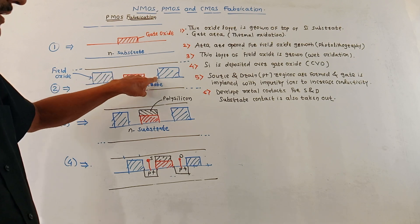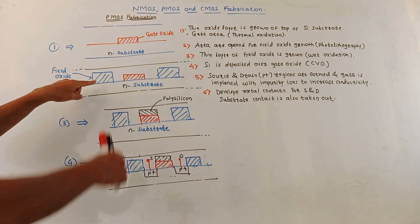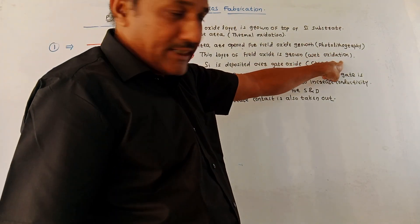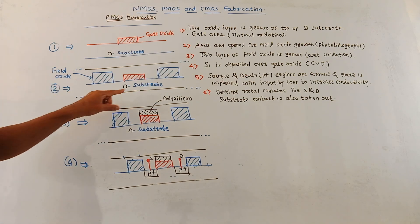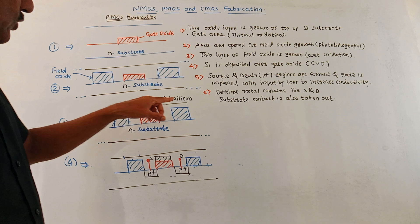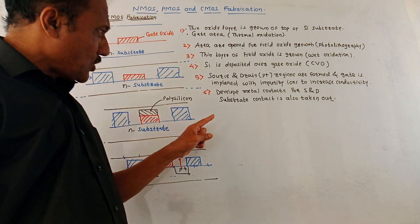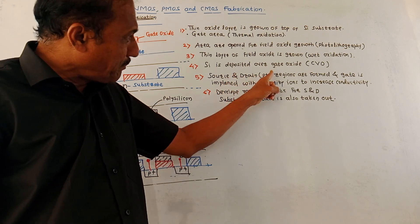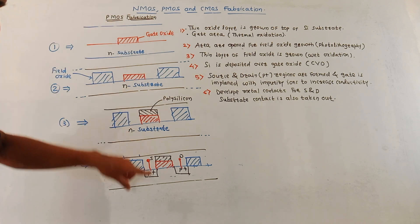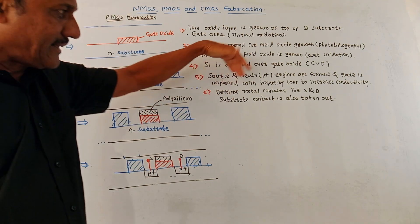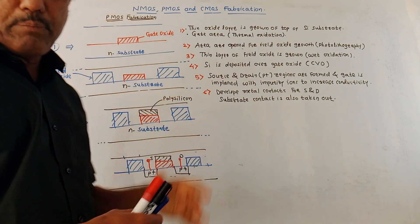Areas are opened for field oxide growth using photolithography, and thin layers of field oxide are grown using the wet oxidation method — similar to the previous discussion, but the substrate remains N-type. A polysilicon layer is grown on the gate oxide layer. Then the formation of source and drain, that is P-plus regions, is done — unlike NMOS where N-plus regions were used. Metal contacts and the substrate contact are taken out, completing PMOS fabrication.